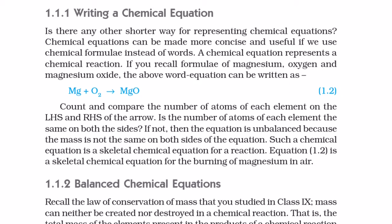If not, then the equation is unbalanced because the mass is not the same on both sides of the equation. Such a chemical equation is a skeletal chemical equation for a reaction. Equation 1.2 is a skeletal chemical equation for the burning of magnesium in air.